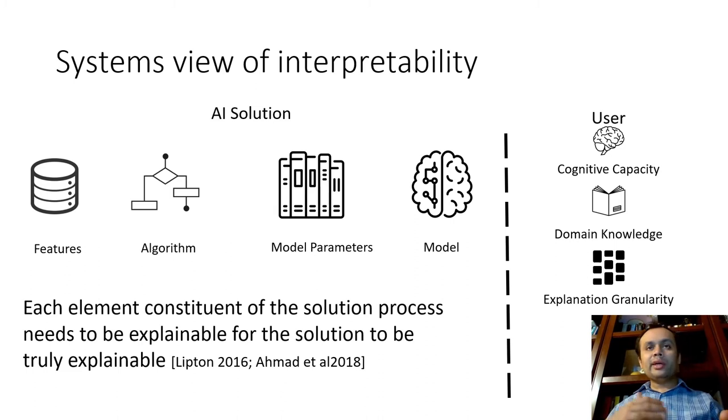And we need to take a system view of interpretability, as I just stated. So, considering the AI or the machine learning system as a whole, in terms of features, model parameters. That for certain use cases, individual constituent elements of the system should be interpretable. And we have to take that into account, while also taking the user's capabilities, in terms of their cognitive capacity.